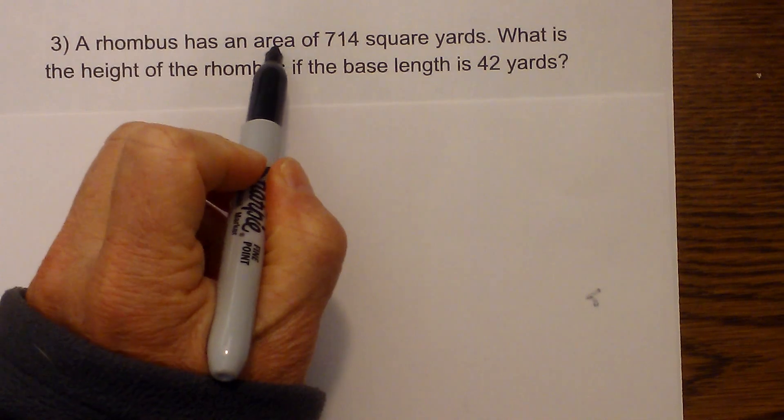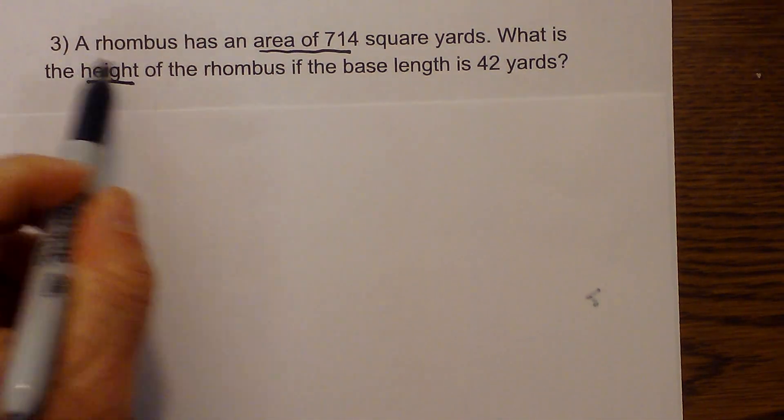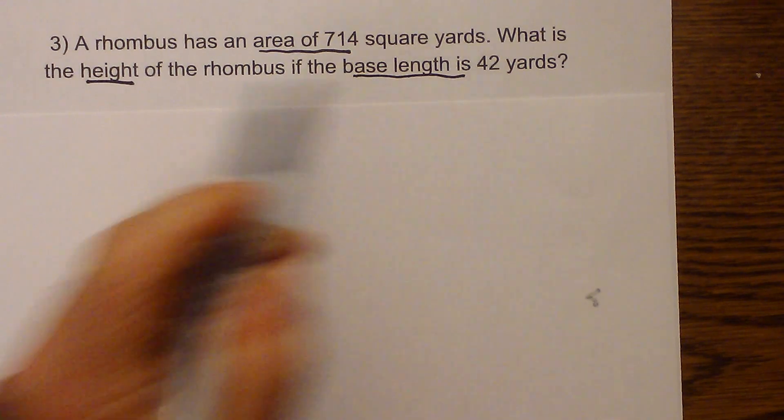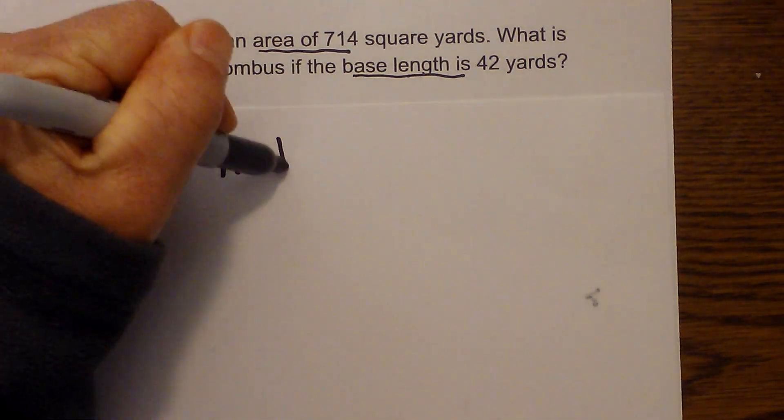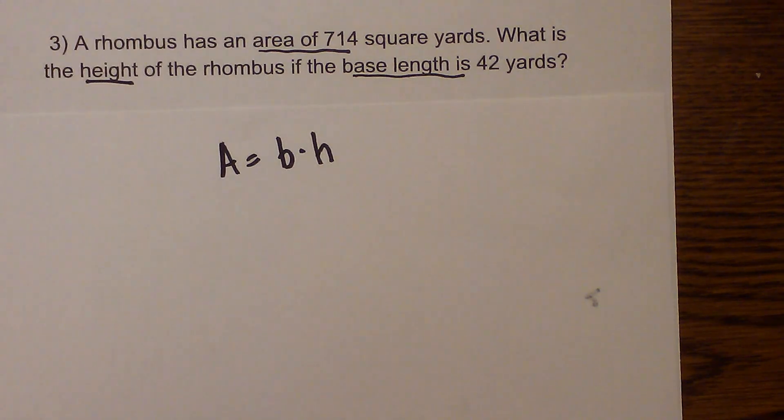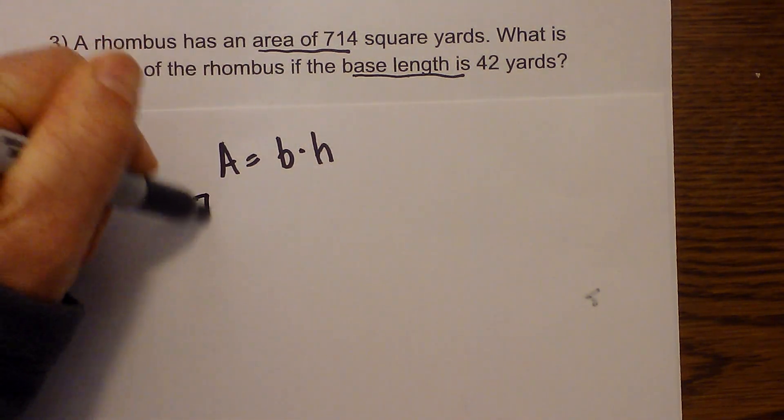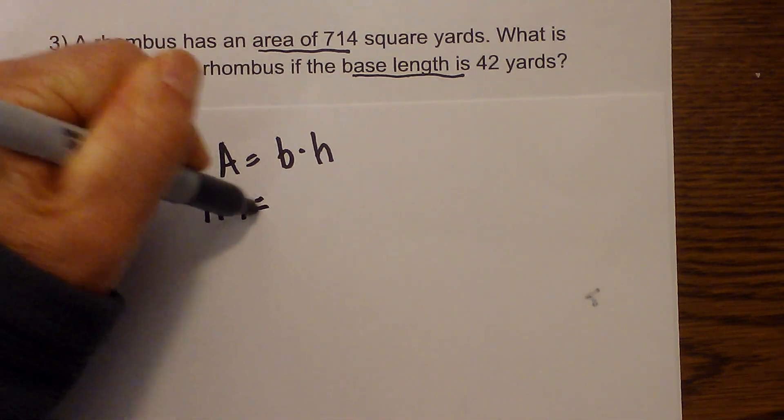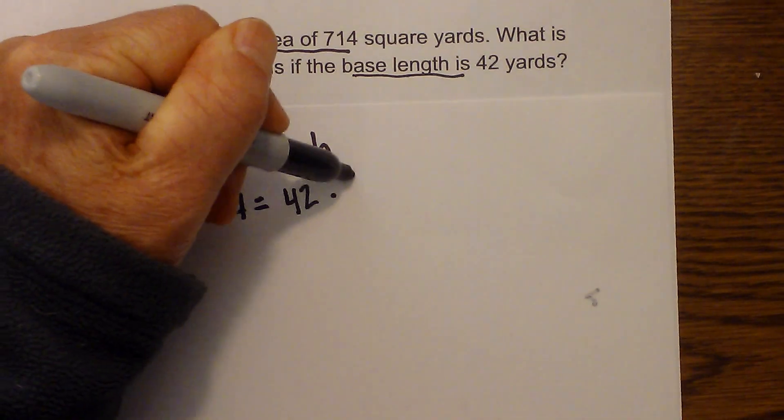This is a word problem. It says a rhombus has an area of 714 square yards. What is the height if the base length is 42 yards? Let's use the formula area equals base times height. And so let's see what is given. They have given us the area of 714 and a base of 42 yards and we are trying to find height.